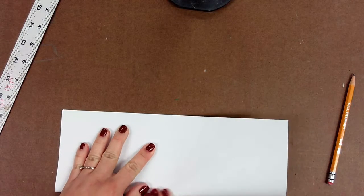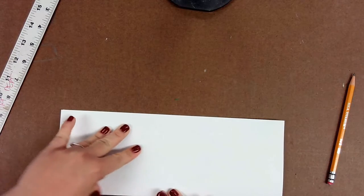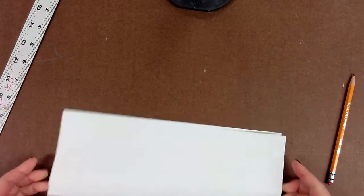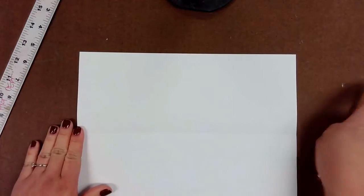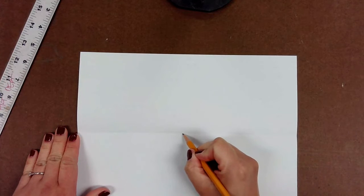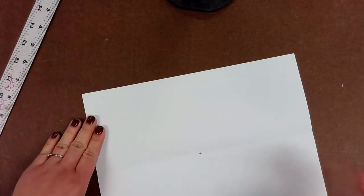in half hamburger style. You just want to match up the corners so that they line up before you actually crease your line. Then we're going to open up our paper and figure out where we want to place the vanishing point. I've just gone ahead and made a really dark dot here right in the middle of my paper. You can do the same as well.